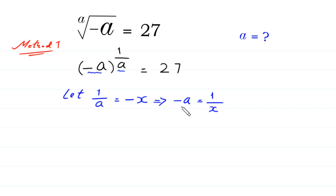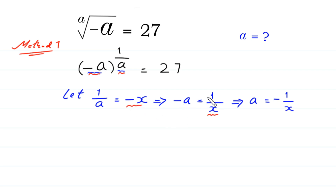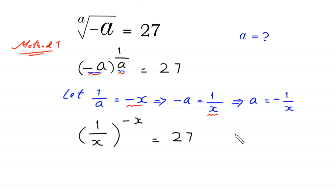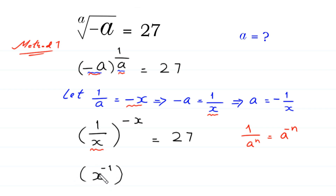And if we multiply both sides of this equation by negative 1, then this implies a is equal to negative 1 over x. Now we substitute: negative a equals 1 over x, and 1 over a equals negative x. So we get 1 over x to the power negative x is equal to 27. Using the property 1 over a to the power n equals a to the power negative n, we can write this as x to the power negative 1 over x is equal to 27.